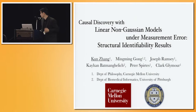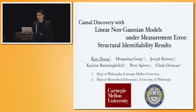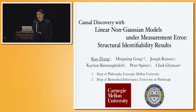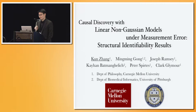Good afternoon everyone, thanks for coming. The title of the paper is a bit long — it's called 'Causal Discovery with Linear Non-Gaussian Models in the Presence of Measurement Error: Structural Identifiability Results.' Basically, this is a theory paper. We want to see when we have measurement error in the data, what kind of structural information can we discover from observational data with noise.